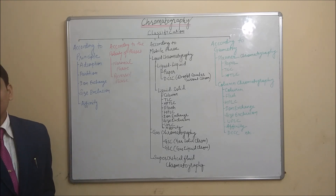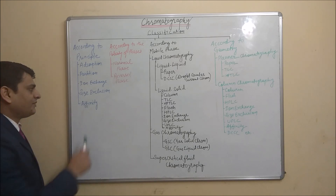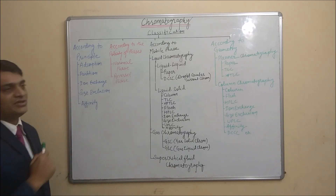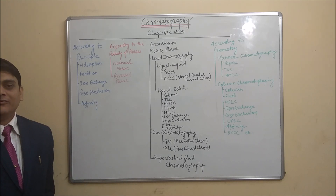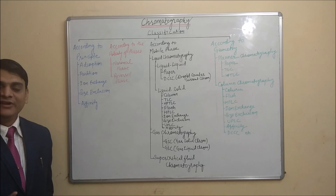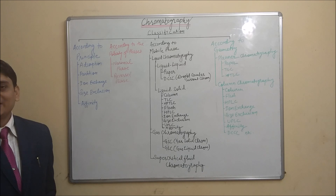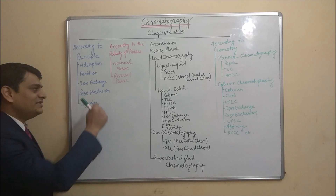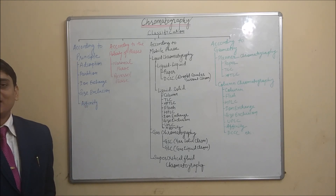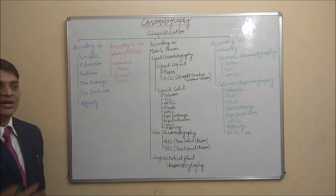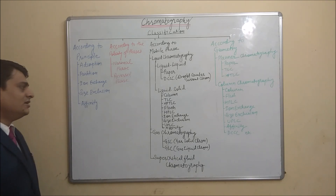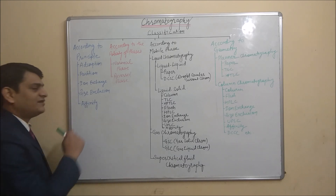The next one is size exclusion chromatography. In this chromatography, we select samples where there is a molecular weight difference between compounds in a mixture, because separation takes place due to difference in molecular weight. Various types of gels are used as the stationary phase — it may be soft gel, semi-rigid, or rigid.